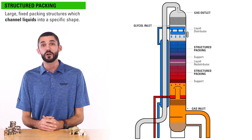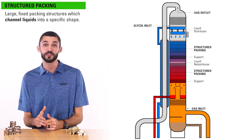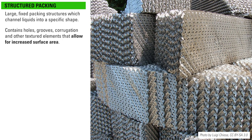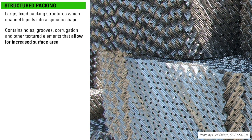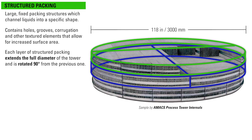Structured packing uses large fixed packing structures which channel liquids into specific shapes. This material contains holes, grooves, corrugations, and other textured elements that allow for increased surface area. Each layer of the structured packing in the absorber extends the full diameter of the tower and is rotated 90 degrees from the previous one.